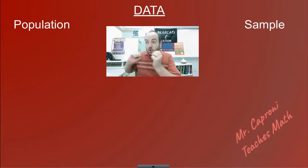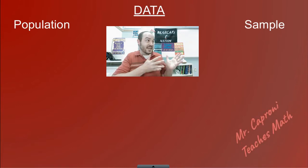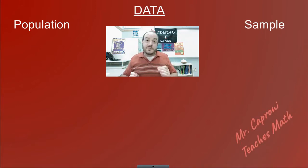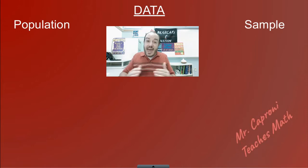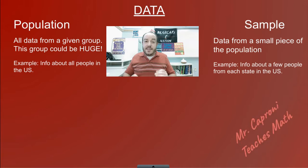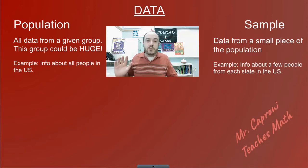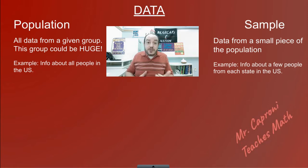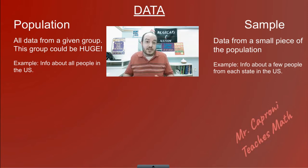Data is usually collected from two major sources: a whole population or a sample. A population is when we're talking about everyone involved — the whole group in a situation. This can be giant, like all people in the U.S., or it could be all high school students, all seniors at West High, or all students at West High.